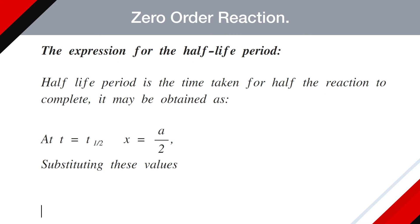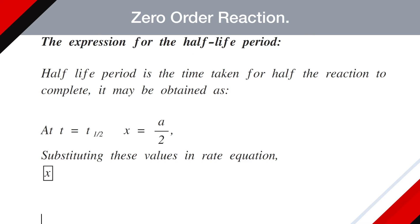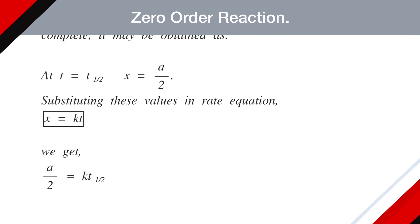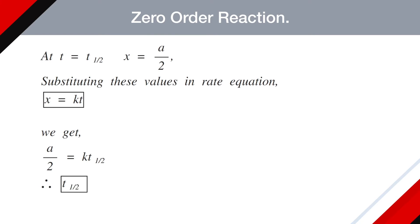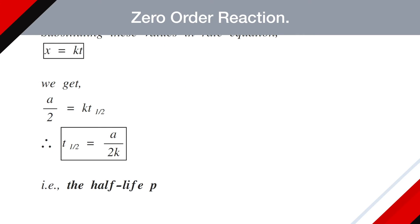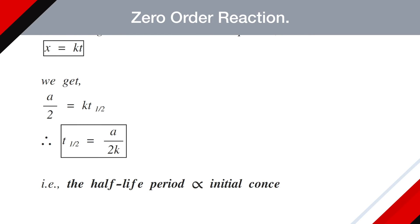Substituting these values in rate equation, that is X equals KT, we get A by 2 equals K times T half. So T half becomes A by 2K. That is, the half-life period is proportional to initial concentration.